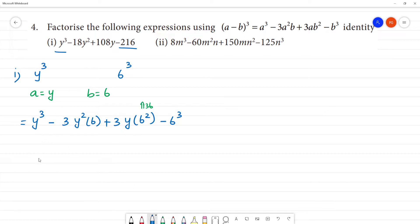Now in the formula, what is the answer? The answer is y minus 6 the whole cube. That is, a is y, b is 6. Now if we look at factors: y minus 6, y minus 6, y minus 6 is the factor.